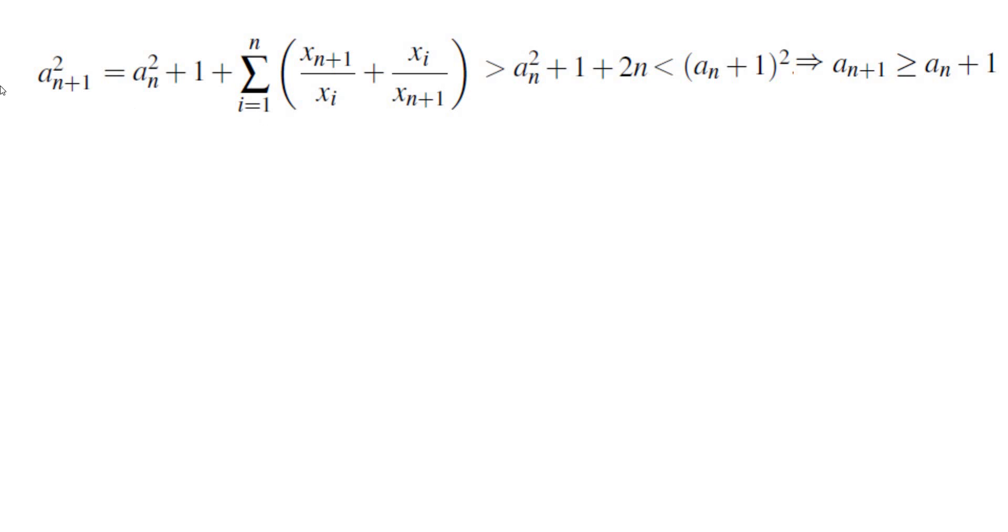At this point, I noticed that the term that I have here, the sum that I have here, can be related to aN. How can we relate that to aN? So if you write it down this way, if you factor xn plus 1 from the terms that have xn plus 1 on top, and factor 1 over xn plus 1 from the terms that have xn plus 1 at the bottom, you would get this expression. Apply AM-GM, and you would get exactly 2 times aN.